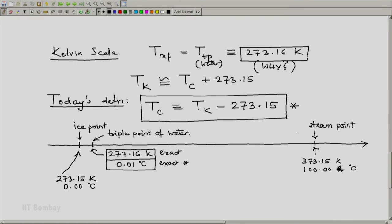And now you will notice, the reason for selecting this value to be 273.15 is that the difference between the ice point and the steam point is 100 degrees C and which is also 100 Kelvin as a temperature difference.